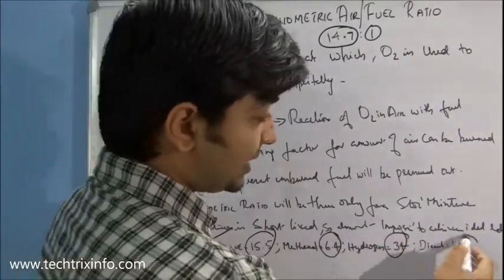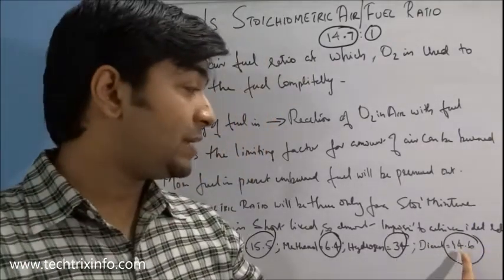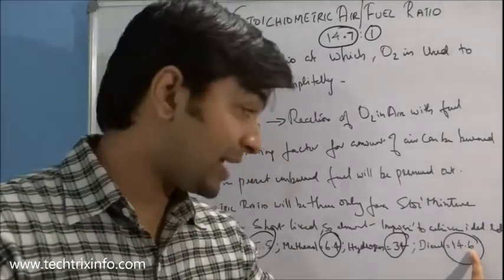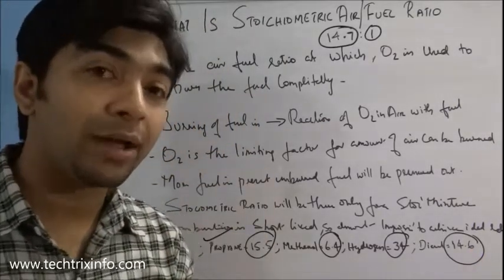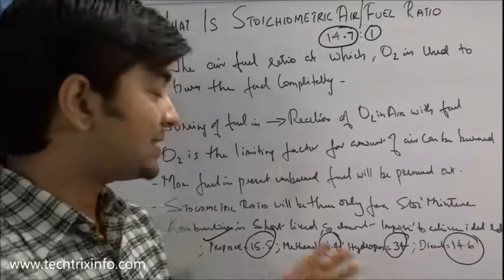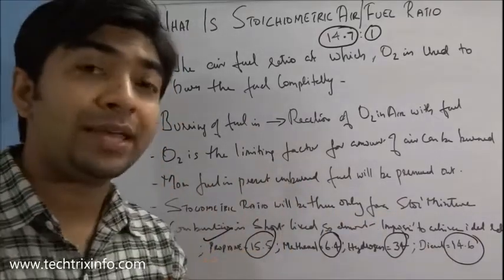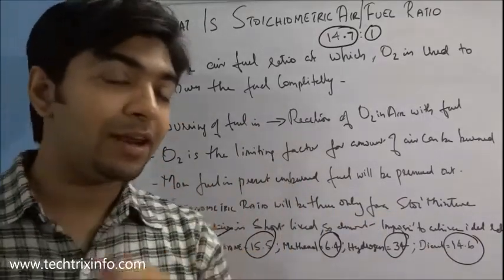For hydrogen it is 34 is to 1 and for diesel it is 14.6 is to 1. That is 14.6 kg of air is required for burning one kilogram of diesel. So that's how stoichiometric air fuel ratio can be defined.